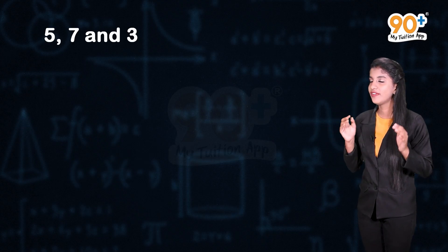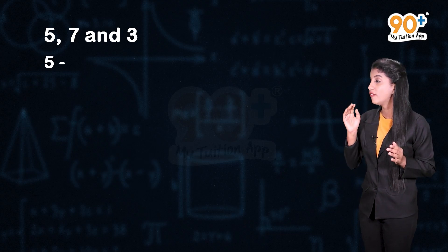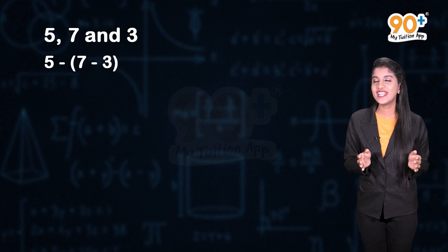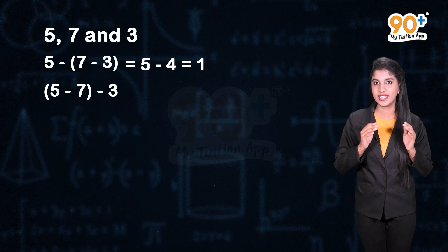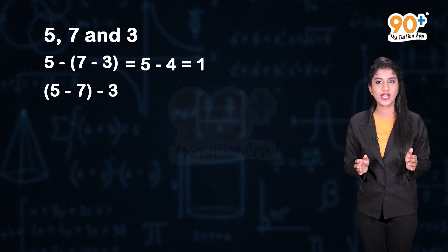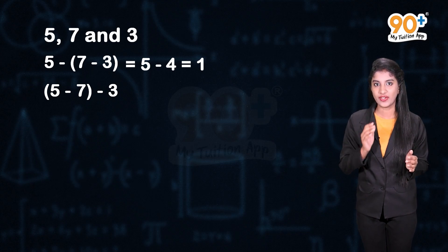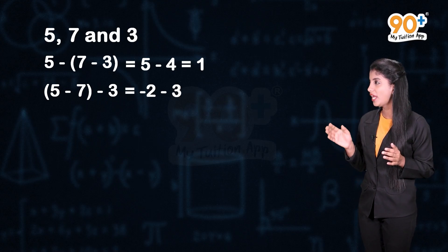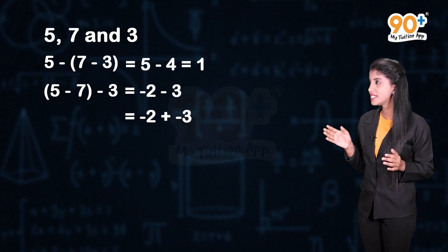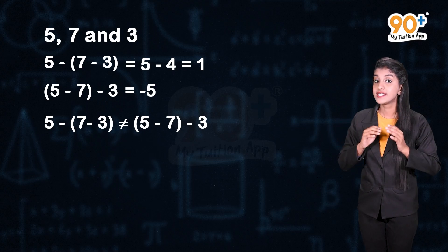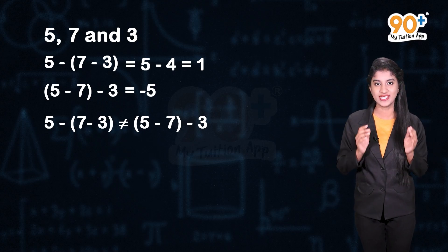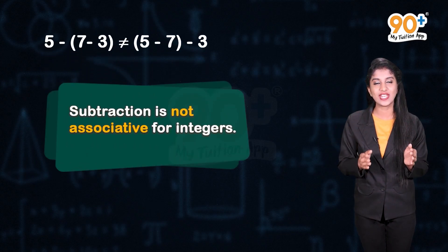Now let us see whether subtraction is associative for integers or not. Let us check three integers 5, 7 and 3. What is (5 - 7) - 3? It is 5 - 4, which is equal to 1. Now, what is 5 - (7 - 3)? By subtracting 5 from 7 we get -2, so 5 - (7 - 3) = -2 - 3, which can also be written as -2 + (-3) = -5. So we can clearly observe that (5 - 7) - 3 is not equal to 5 - (7 - 3). So we can say that subtraction is not associative for integers.